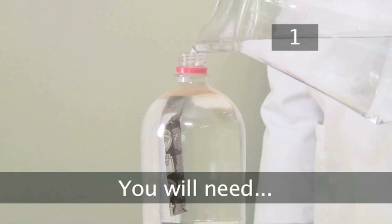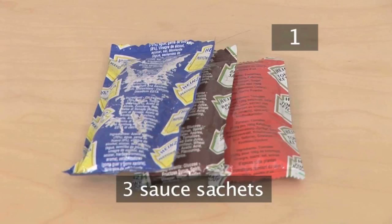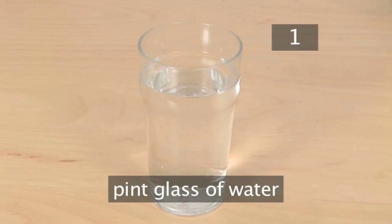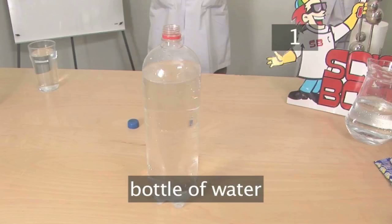Step 1. You will need the following apparatus: three sauce sachets, for instance ketchup or mayonnaise, a pint glass full of water, a large bottle of water, and a jug of water.